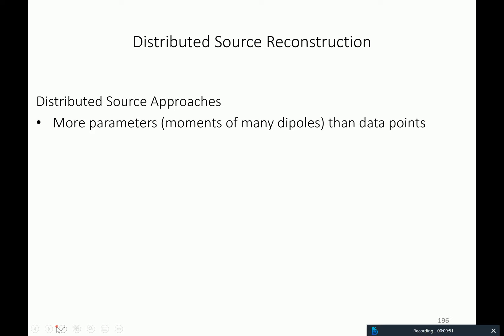The question is: what are the moments of these dipoles — how are they oriented and what is their amplitude? For example, if throughout the brain you use 10×10×10 dipoles in 3D space, you would have 1,000 dipoles, and for each you have three numbers, so 3,000 parameters. These 3,000 parameters you try to determine from the 64 or 128 electrode data points you have — that's an ill-posed problem with many more parameters than data points.